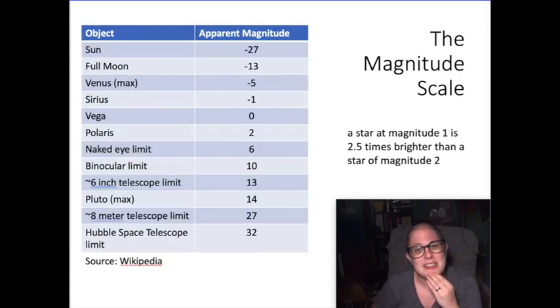The magnitude scale, it's not linear. It's logarithmic. A star at magnitude one is, for example, two and a half times brighter than a star of magnitude two. The magnitude scale, you end up with ten times as bright after five magnitudes. So here, these are the apparent magnitudes, the brightness as measured from Earth of these different objects.